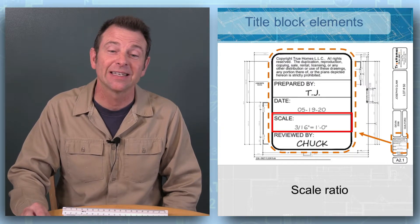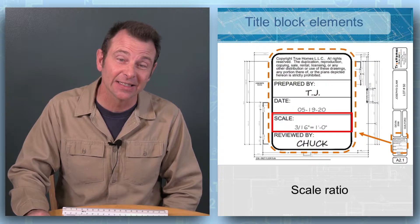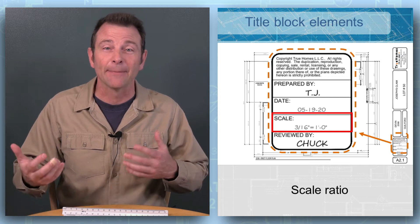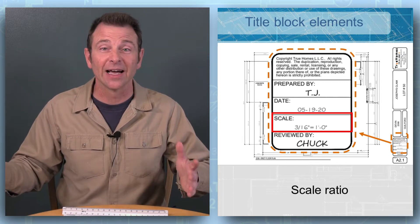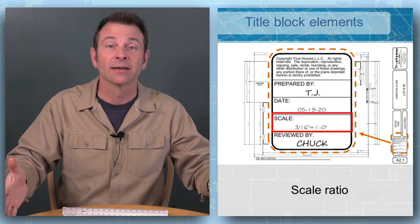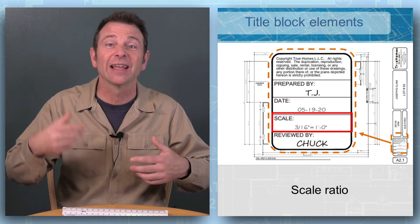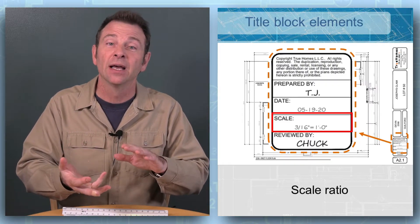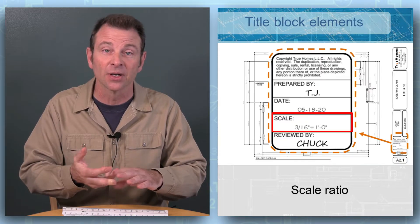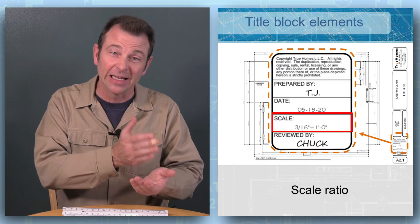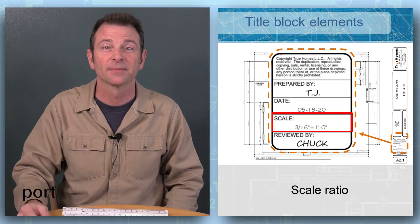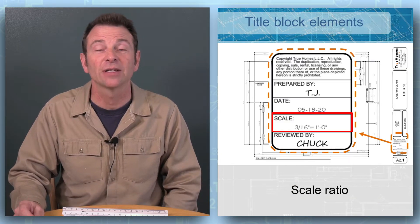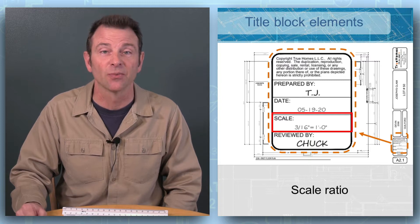The specific scale of any plan should be called out on the plans. You're going to see two units — one is typically in inches if we're talking about an architectural scale, and the other is in feet. It's the amount of reduction we're getting from real life into this plan set. It might be one inch equals one foot, half inch equals one foot, or quarter inch equals one foot. You'll always have the unit spelled out — inches equals one foot. Here we see in the title block the scale is called out at three-sixteenths of an inch equals one foot.